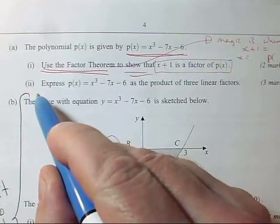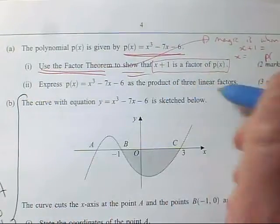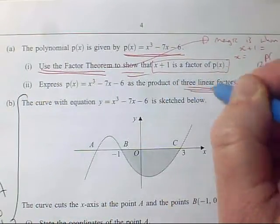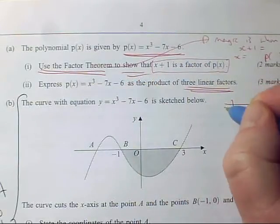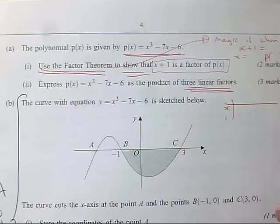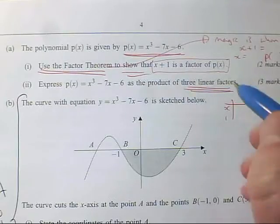Then in 6a(ii), we've now got to express it as the product of three linear factors. So we've actually got to factorize the whole thing. So we do use the grid method. We know that X plus one is now a factor. We fill in the grid.